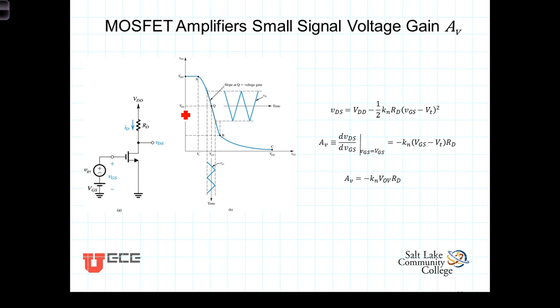Keep in mind our variable naming convention. When both the variable and the subscripts are capitalized, we're referring to DC quantities. So V_DS and V_GS, capital Vs, capital subscripts, these are the DC voltages or the bias voltages.